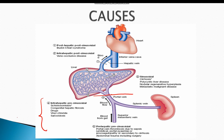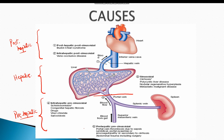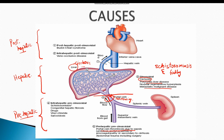Apart from chronic liver disease and cirrhosis, there are multiple causes of portal hypertension. These causes can be pre-hepatic, hepatic, or post-hepatic. Pre-hepatic causes include portal vein thrombosis and narrowing of the portal vein. Hepatic causes include liver cirrhosis, polycystic liver disease, metastatic malignant disease, schistosomiasis, and fatty liver.